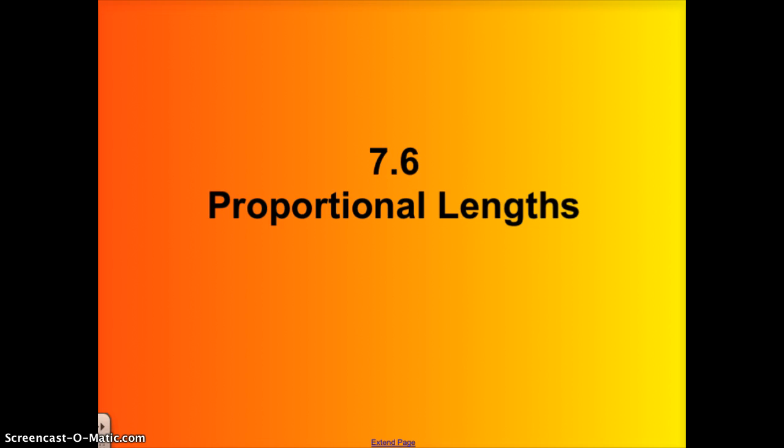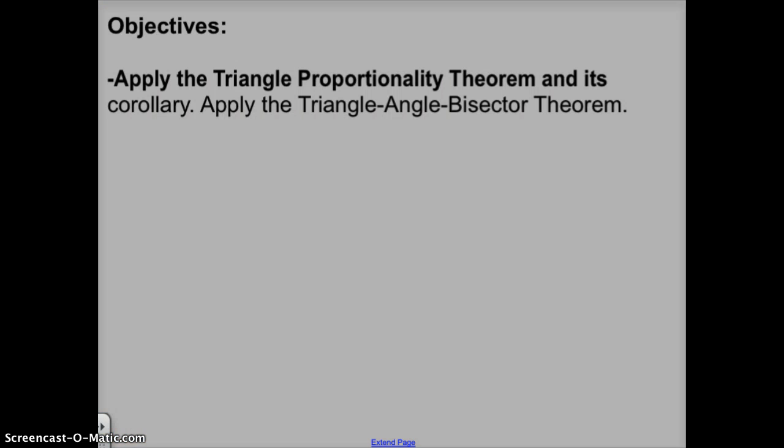Some of this is review, but there are a couple of theorems that just confirm what we already knew about proportional lengths of triangles. The two theorems that we have today are the triangle proportionality theorem and the triangle angle bisector theorem.